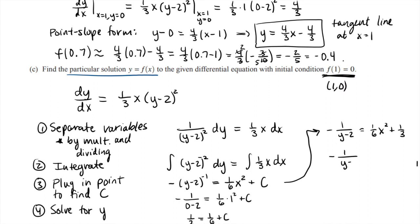I can use a common denominator of 6 again, so this will be 6—2/6 instead of 1/3. And then I have x² plus 2, all over 6. And now I can flip both my fractions, so I get negative (y - 2) equals 6/(x² + 2).